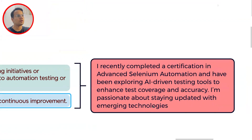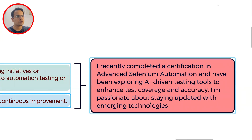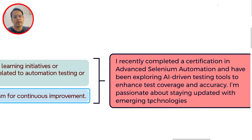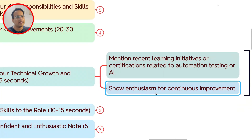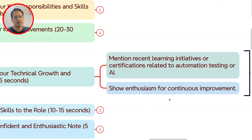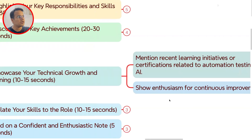For example: 'I recently completed a certification in advanced Selenium automation and have been exploring AI-driven testing tools to enhance test coverage and accuracy. I'm passionate about staying updated with emerging technologies.' Telling the interviewer what you are exploring and learning will give a positive impact. I'm also covering many topics related to AI and how you can use it in automation testing — check out that playlist in the description.